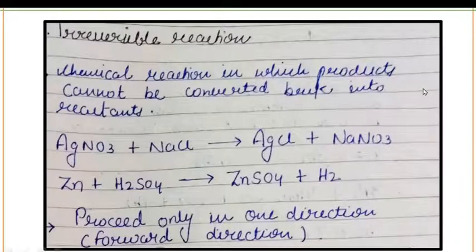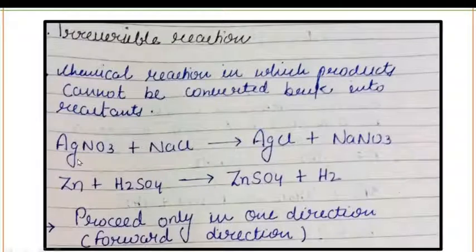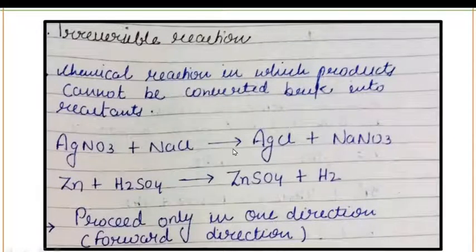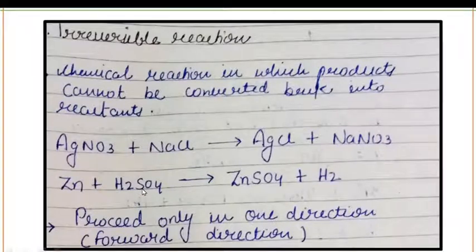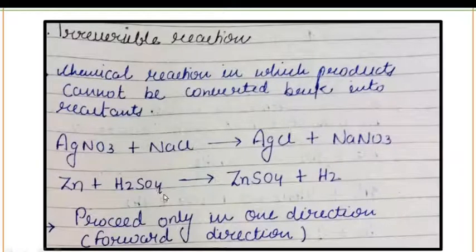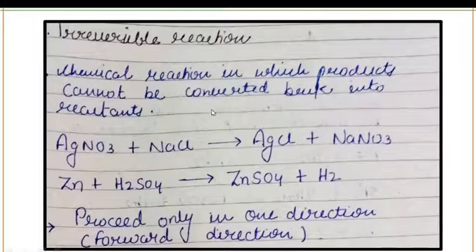Irreversible reactions are chemical reactions in which products cannot be converted back into reactants. For example, AgNO₃ + NaCl reacts to form AgCl + NaNO₃, and the single arrow represents irreversible reactions. The product can never be converted back into reactants. Similarly, Zn + H₂SO₄ forms ZnSO₄ + H₂, but ZnSO₄ + H₂ cannot reform Zn + H₂SO₄. Irreversible reactions proceed only in the forward direction; reactants convert into products but products cannot convert back.